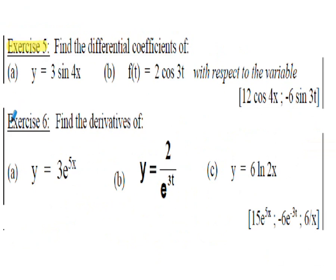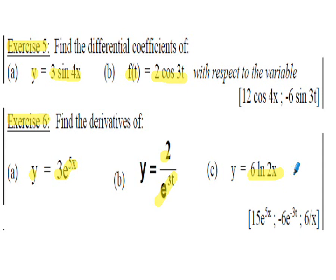Exercises 5 and 6 involve different functions. Exercise 5 covers sine and cosine: y = 3sin(4x) and f(t) = 2cos(3t). Exercise 6 covers exponential and logarithmic functions: y = 3e^(5x), y = 2/e^(3t), and y = 6ln(2x). Refer to the standard forms table. If you want to attempt these before seeing the solutions, stop the presentation now — answers are shown in brackets.